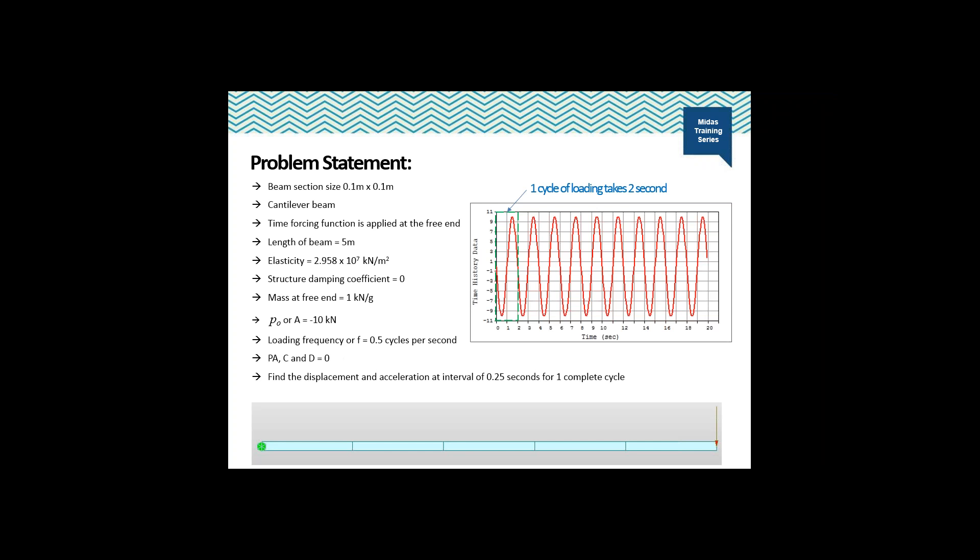The beam section is 0.1 meter by 1 meter — it's a cantilever beam. The time forcing function is applied at the free end. Total length of the beam is 5 meters. The elasticity of the material is as shown on screen. The system is assumed free of damping. The mass considered at the free end of the cantilever is 1 kilonewton per g, where g is gravity. The initial force P0 used for this sinusoidal forcing function is minus 10 kilonewtons, and the loading frequency f is 0.5 cycles per second — one cycle of loading takes two seconds. Phase angle as well as c and d for the sinusoidal parameters are kept at zero.